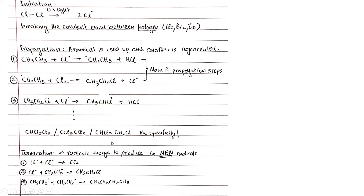Then we have termination: two radicals merge to produce no new radicals. A chlorine radical can meet another chlorine radical to produce Cl2, or a Cl radical can meet a CH2CH2 radical to produce chloroethane. Two ethane radicals can merge to produce a four-carbon chain. This can go on and on, which is why there's no specificity in free radical substitution.